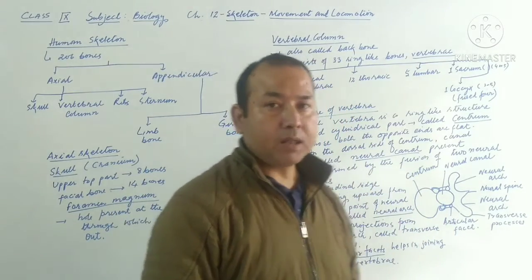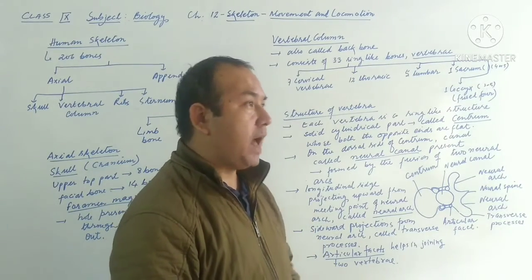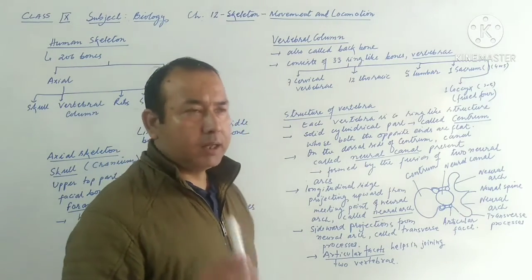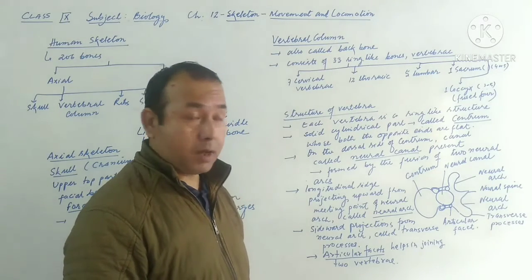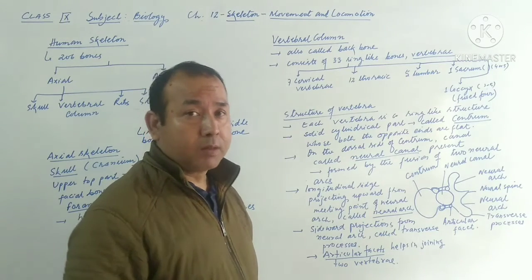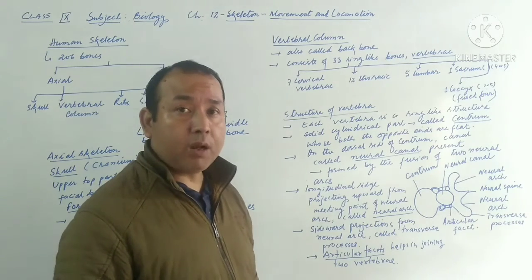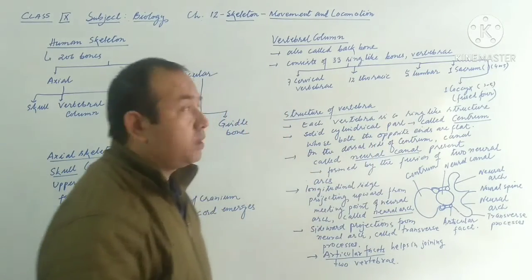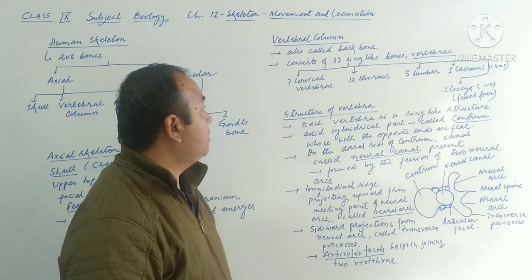Now let's understand the vertebral column, which is the second part of the axial skeleton. The vertebral column is also called the backbone. There are around 33 ring-like structures, usually called vertebrae. Vertebrae is the plural form, and vertebra is the singular form. These 33 ring-like structures present in the backbone are called vertebrae.